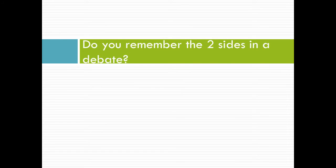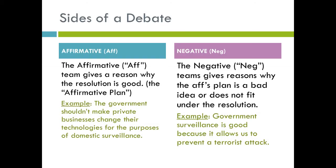Question for you: do you remember the two sides in a debate? The first side is the affirmative, or the AFT team, and they give reasons why the resolution is good. For example, they could have an AFT plan that says the government shouldn't make private businesses change their technologies for the purposes of domestic surveillance. The NEG team gives reasons why the AFT plan is a bad idea or doesn't fit under the resolution — for example, that government surveillance is good because it allows us to prevent a terrorist attack.